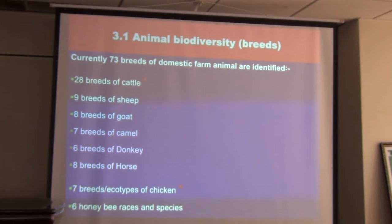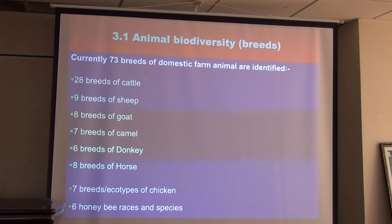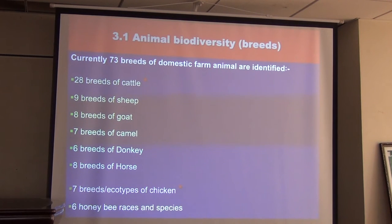For example, the 28 cattle breeds identified are based only on phenotypic characterization — we need to do a lot more to identify further breeds. Similarly, the seven chicken ecotypes identified are still being characterized. There is much more work to be done to make the identification comprehensive.